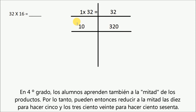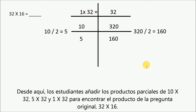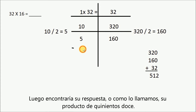In fourth grade, students also learn to halve products. So, they can then halve the 10 to make 5, and the 320 to make 160. From here, students would add the partial products from 10 times 32, 5 times 32, and 1 times 32 to find the product of the original question, 32 times 16. They would then find their answer, or as we call, their product of 512.